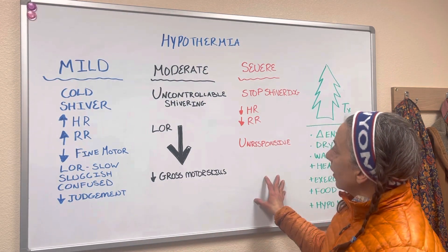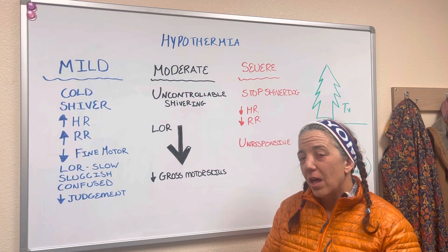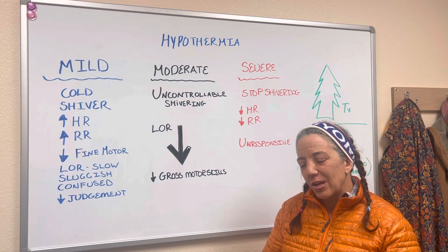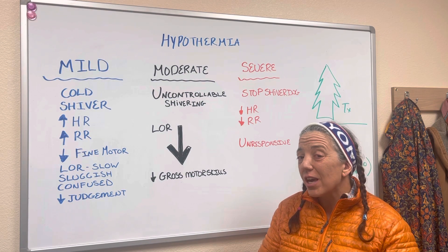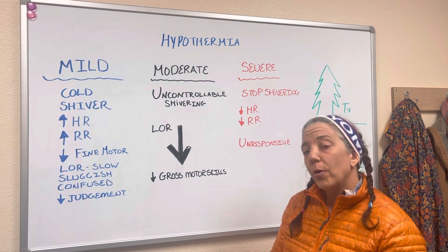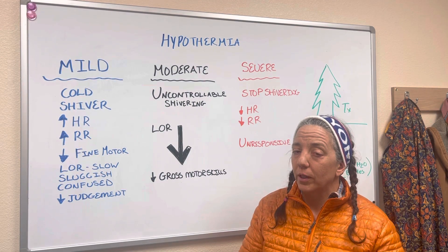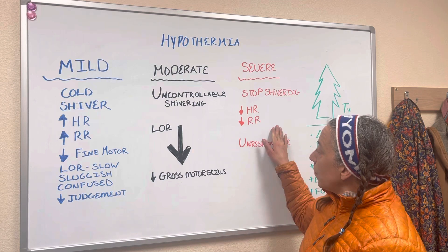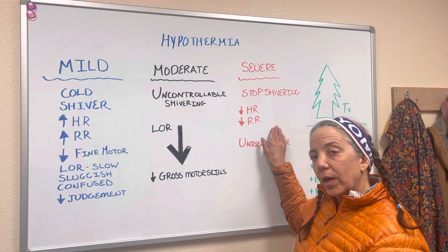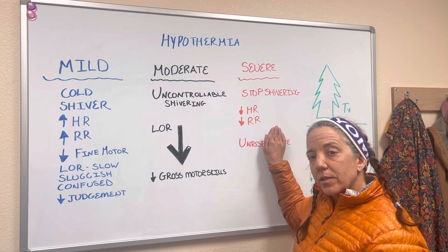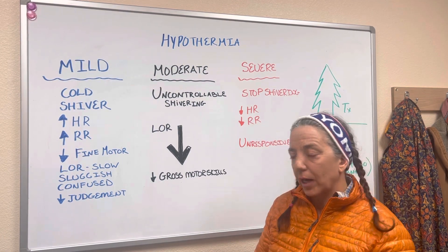The severe hypothermic patient has stopped shivering. Their body has given up and said shivering is using a lot of energy, so it's just going to stop. Their pulse rate and heart rate are going to drop so low that it might be really hard to find. For this patient, we're going to take their pulse and heart rate for one whole minute instead of our regular 30 seconds, because it might be so hard to detect.